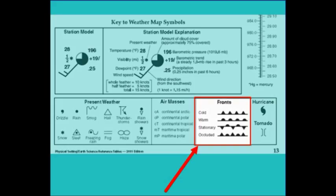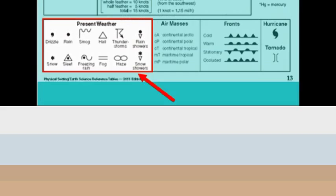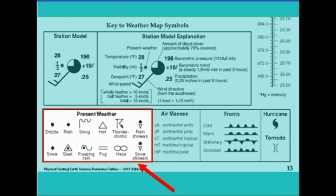Almost all types of precipitation, including rain, drizzle, snow, sleet, freezing rain, and hail, form in the same basic way, which is that air is cooled to its dew point. You don't have to memorize all the little factors that change one type of precipitation to the next, but it is important to recognize that each one has a different symbol on the present weather key on the reference table.